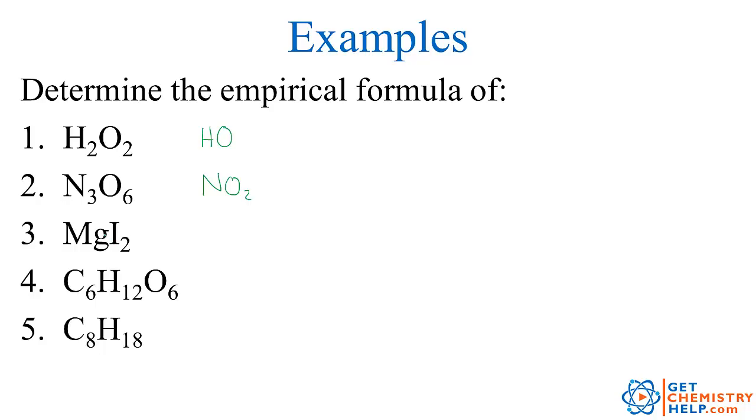Well how about magnesium iodide? MgI2. Well this has a 1 to 2 ratio. So much like carbon dioxide, we can't reduce 1 to 2 down to a smaller whole number ratio. Anything smaller than that would have to be fractions. So MgI2 is also the empirical formula.